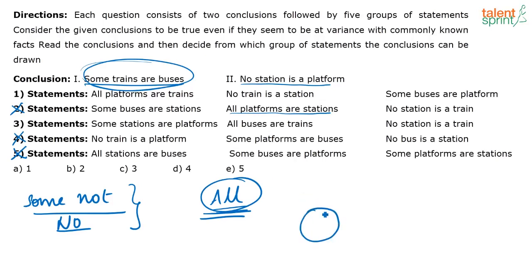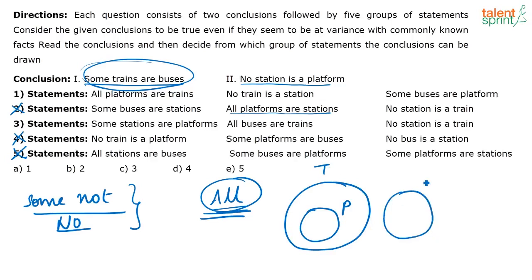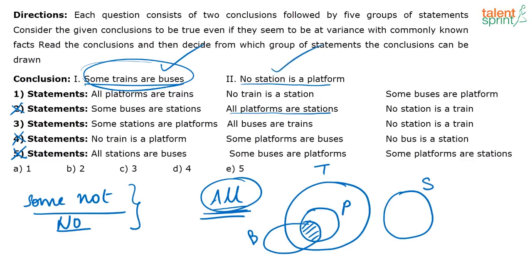Let us look at option 1: all platforms are trains, no train is a station, some buses are platforms. Drawing the Venn diagram with minimum overlapping, the conclusion 'some trains are buses' definitely follows. Now, 'no station is a platform' — it is already given that no train is a station and all platforms are trains, so basically platforms fall under trains and no trains are stations. So definitely no station is a platform. That is also true. So the correct answer for this question is option 1.